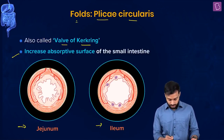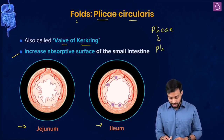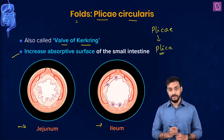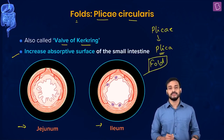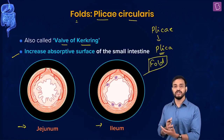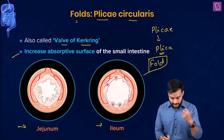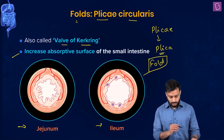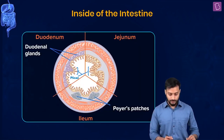The word 'plica' is derived from Latin and Greek, meaning 'fold.' Hence the name plica circularis - these are folded structures inside the intestine.